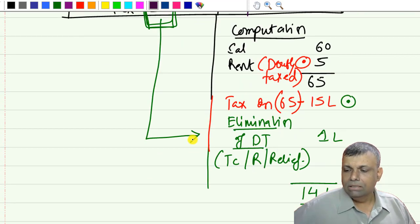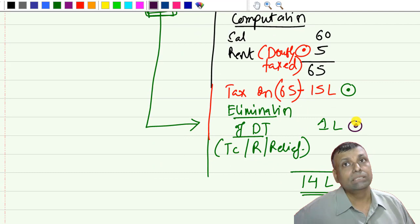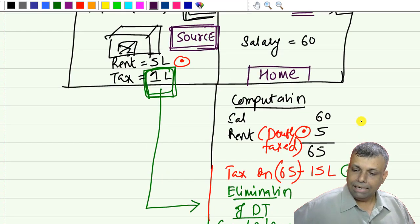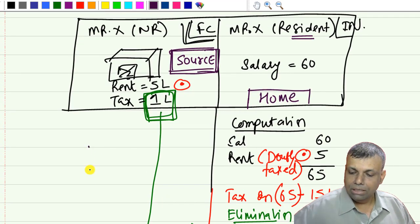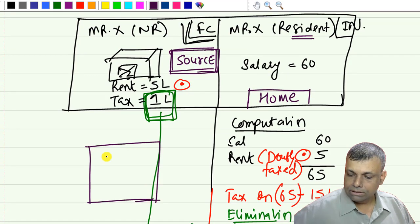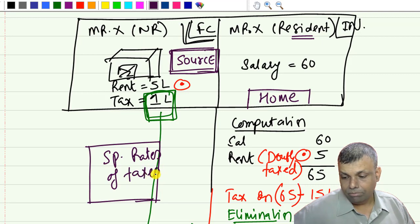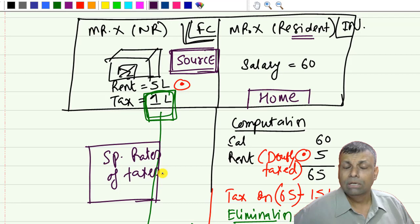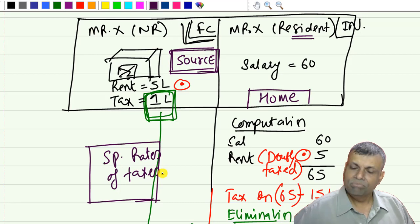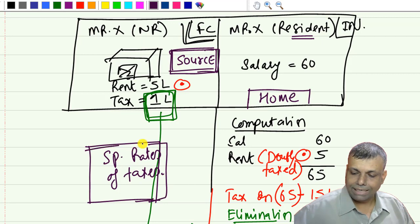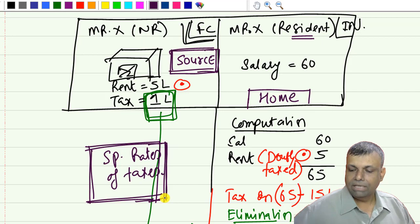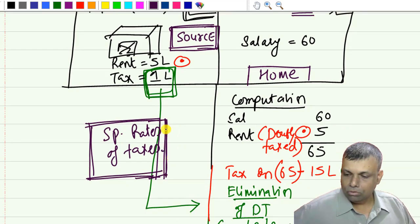Normally in the home country you get this kind of relief or rebate, and in the source country generally what you get is something called special rates of tax. This is a very general thing - there is no hard and fast rule that it will always be like this - but as a general interpretation, in the source country you get special rates of taxes, and this is the general operation to be carried out.